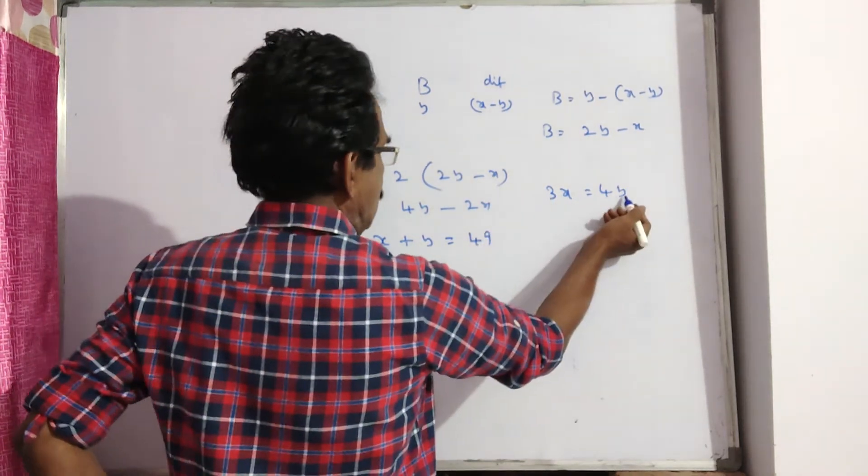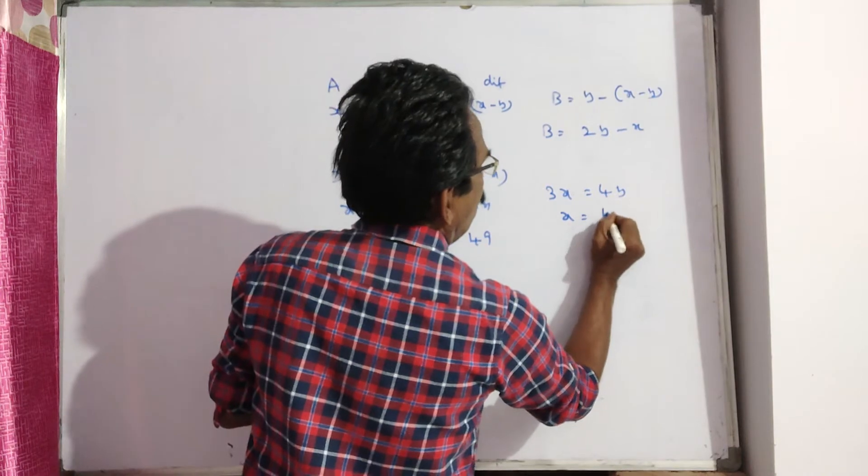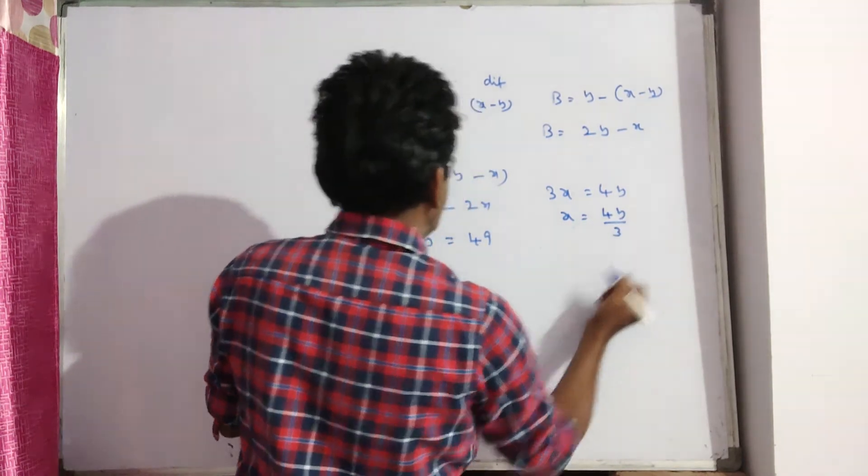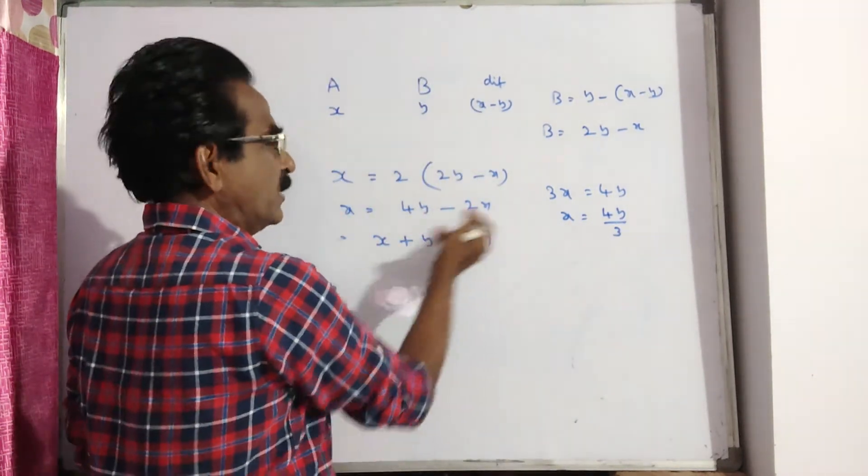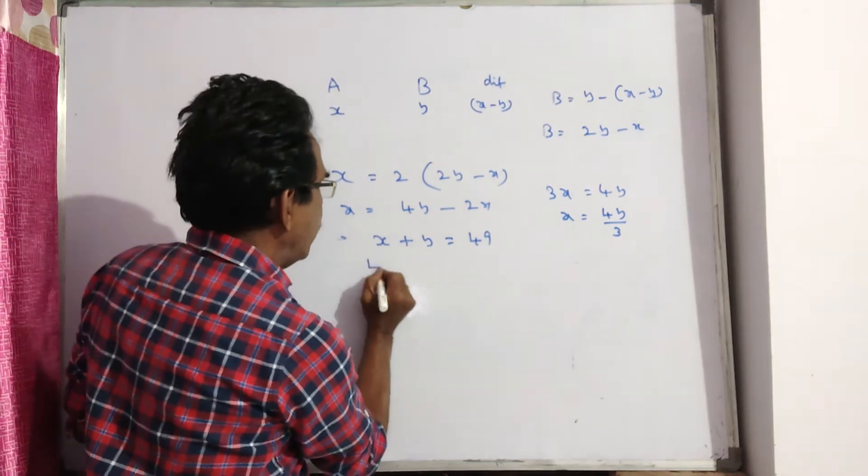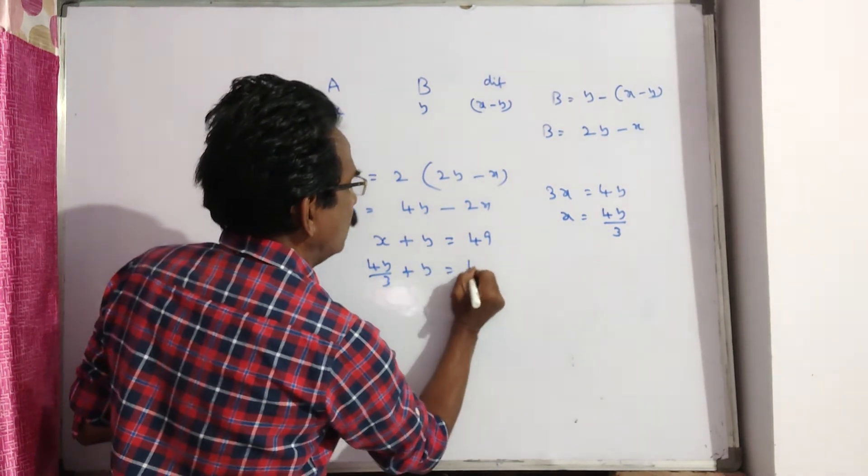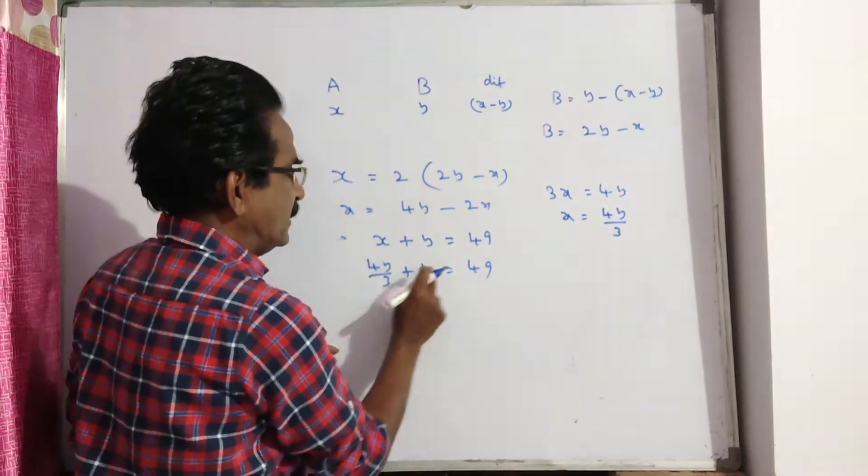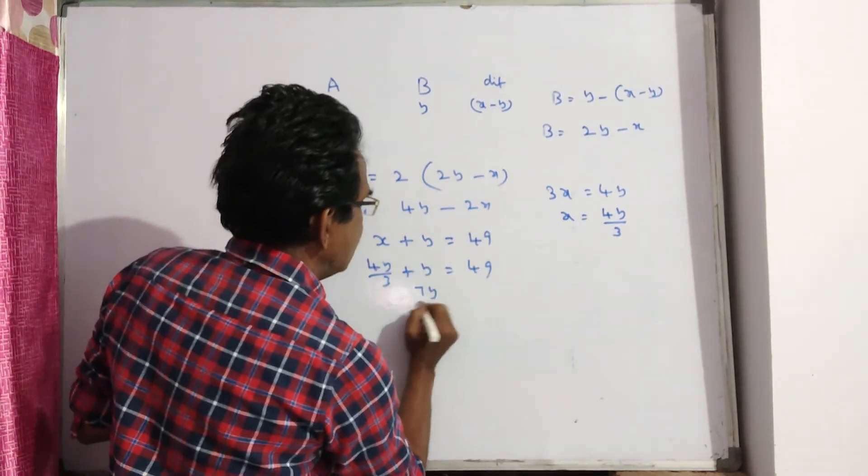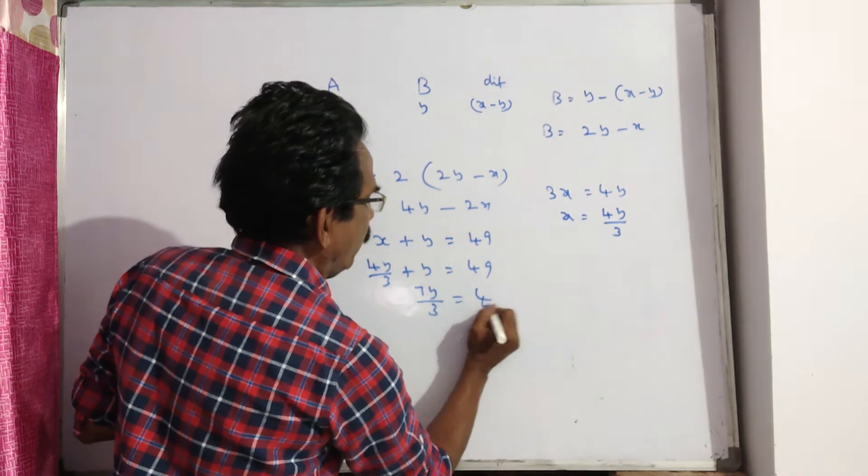Now, 3X is equal to 4Y, so X is equal to 4Y by 3. 4Y by 3 plus Y is equal to 49. 4Y plus 3Y, 7Y by 3 is equal to 49.